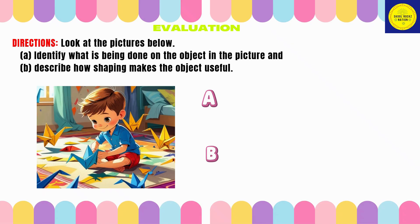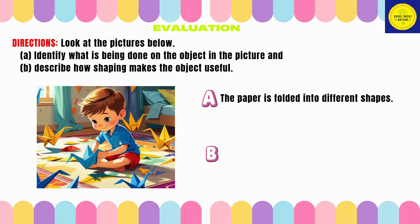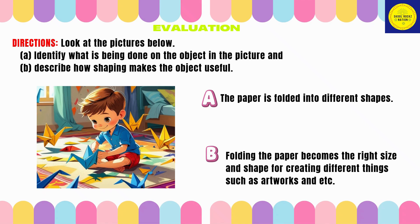For our last activity, look at the pictures below. Identify what is being done to the object in the picture, and describe how shaping makes the object useful. Here are the answers: in the picture, the paper is folded into different shapes. Shaping makes the object useful because folding the paper makes it the right size and shape for creating different things, such as artworks and more.